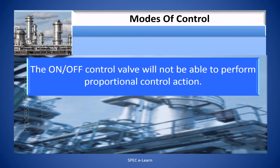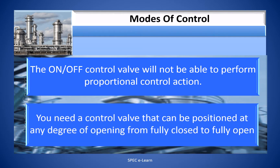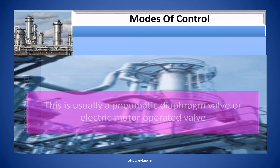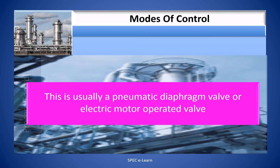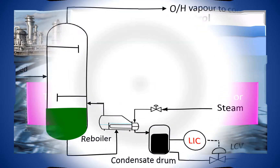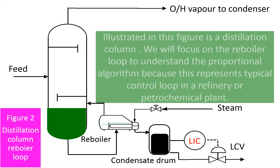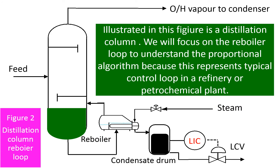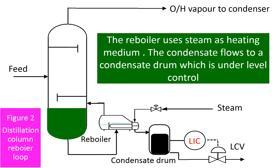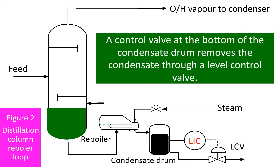The on-off control valve will not be able to perform proportional control action. You need a control valve that can be positioned at any degree of opening from fully closed to fully open — usually a pneumatic diaphragm valve or electric motor operated valve. Illustrated here is a distillation column. We will focus on the reboiler loop to understand the proportional algorithm, as this represents a typical control loop in a refinery or petrochemical plant. The reboiler uses steam as a heating medium, and condensate flows to a condensate drum under level control, with a control valve at the bottom removing condensate.